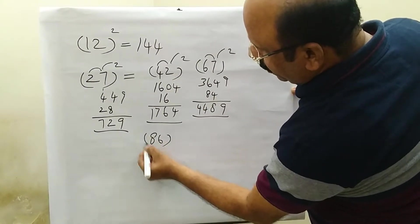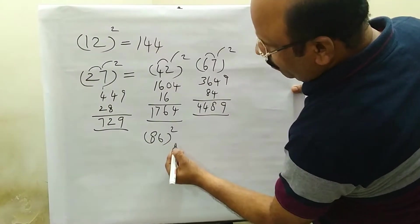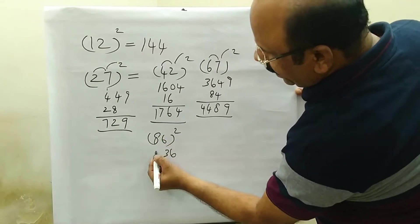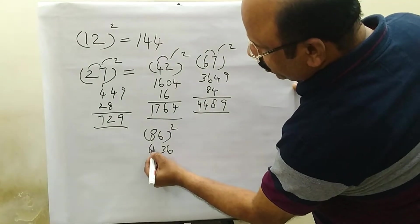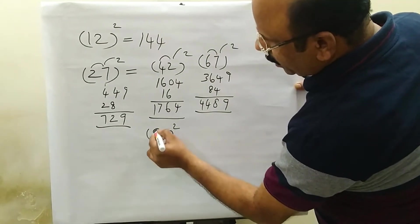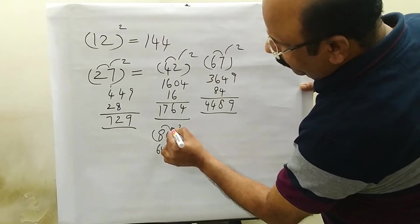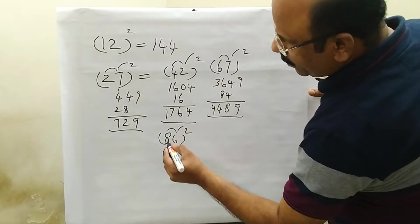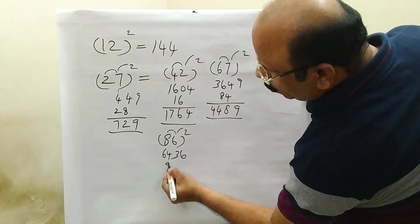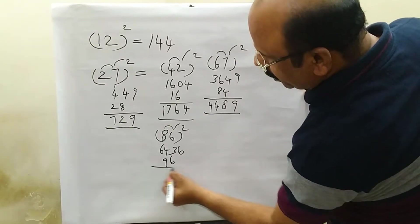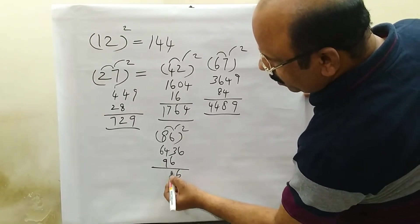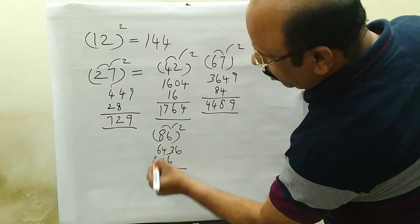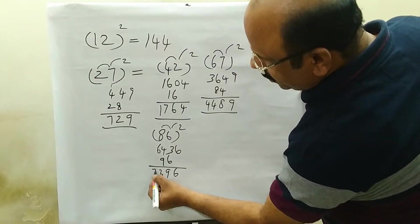86 squared: 6, 6 gives 36. 8, 8 gives 64. 8 times 6 is 48; 48 into 2 is 96. One digit tally, we go ahead. 6 plus 3 is 9; 9 plus 4 is 13, carry 1 remaining — 7. Answer is 7396.